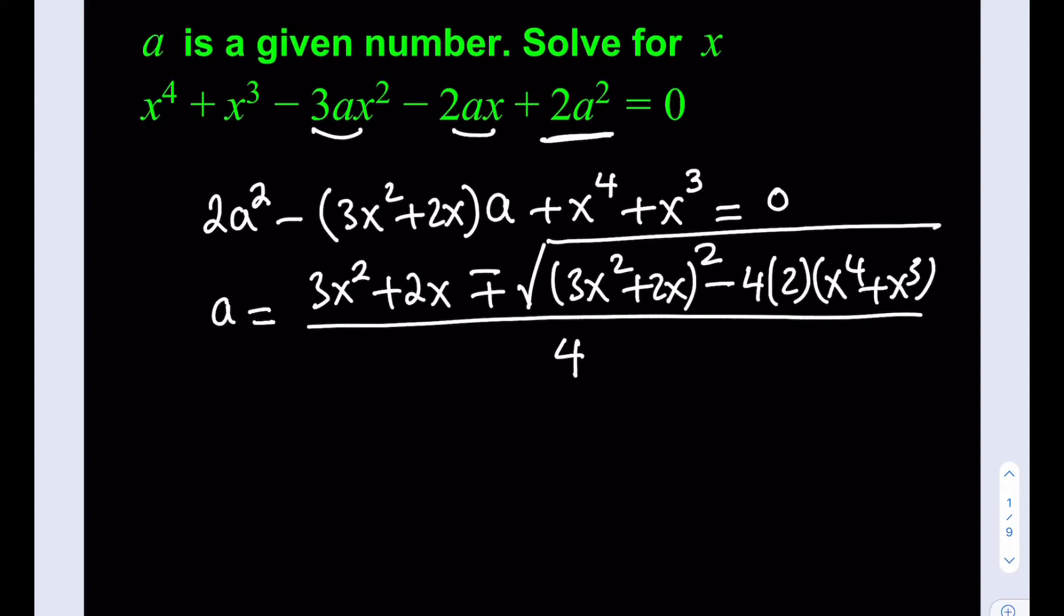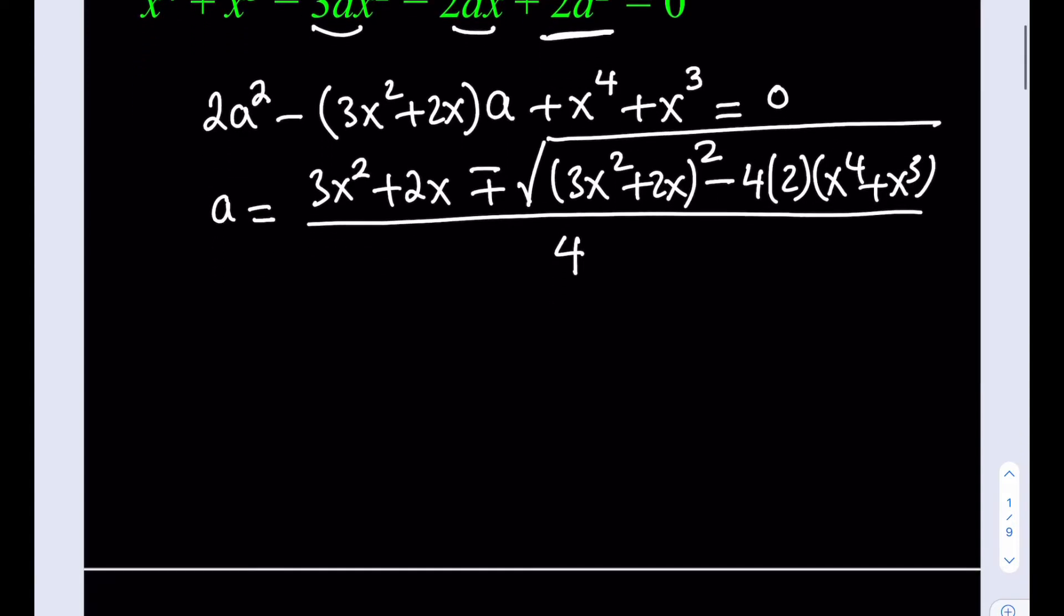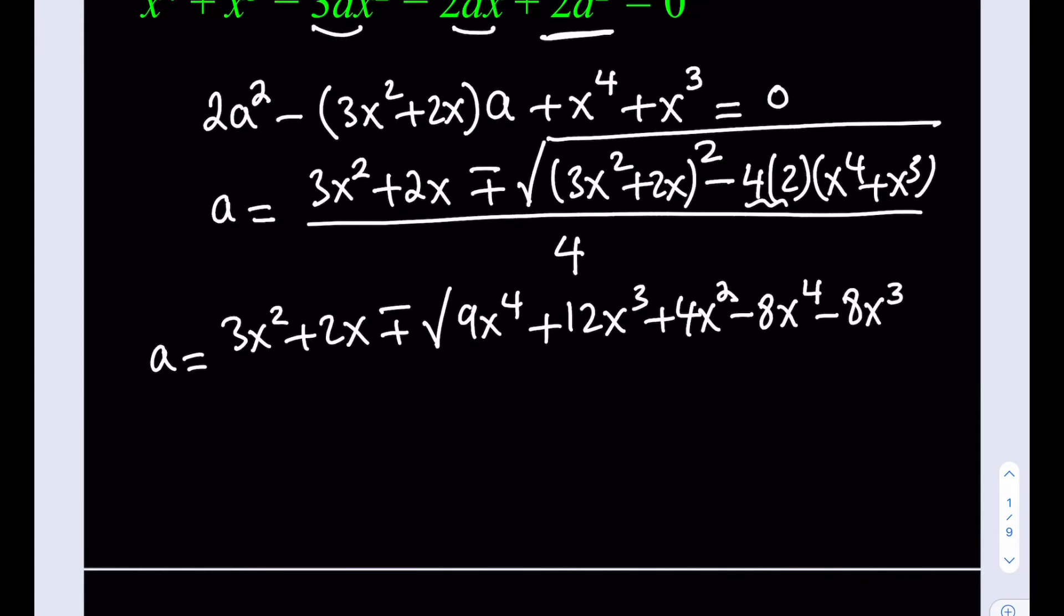Now we have a in terms of x, but things can be simplified here. Let's go ahead and expand this a little bit more. So this part is going to stay the same with the plus minus inside the radical. Let's see what we have. I'm going to square a plus b, so that's going to be 9x to the fourth plus 2ab. That's going to give me 12x cubed, and then plus 2x quantity squared, which is 4x squared. Here, 4 times 2 equals 8, so I'm going to distribute the negative 8 there. And that's going to give me minus 8x to the fourth minus 8x to the third. So that's going to be my expression under the radical, and I'm going to divide everything by 4.